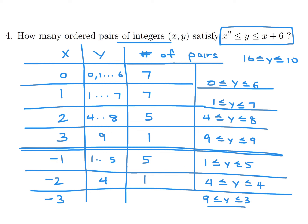Adding up all the pairs: 7 plus 7 is 14, plus 5 is 19, plus 1 is 20, plus 5 is 25, plus 1 is 26. So 26 total ordered pairs satisfy that set of inequalities.